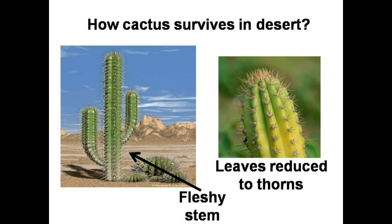There are plants in the desert too. Desert climate is very hot and dry, so only a few plants are found there, like cactus. There is hardly any rainfall in the desert. Desert plants have fleshy stems to store water, and their leaves are like thorns to prevent water loss.